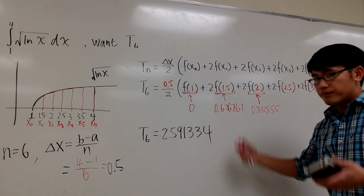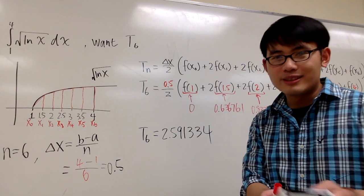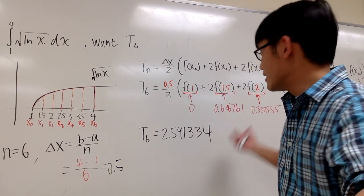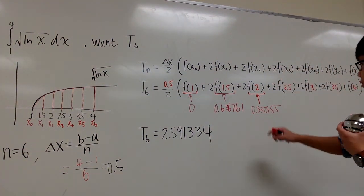So the book wants us to use six decimal places, six decimal places, so that's why I just write this down.